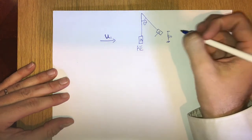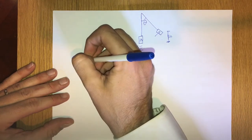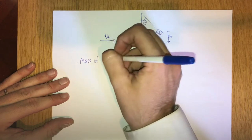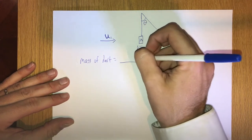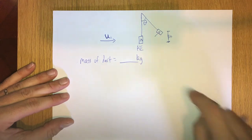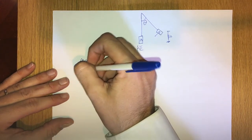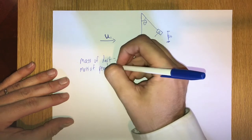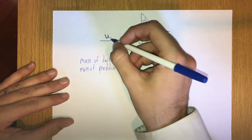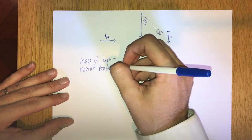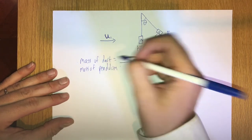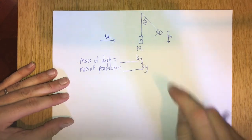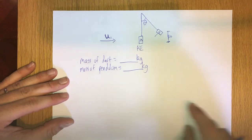One of the things we're going to need to know is the mass of the dart, which we'll measure in the lab in kilograms. We also want to know the mass of the pendulum. Because we're using momentum conservation, and momentum is the product of mass and velocity, both the mass of the dart and the mass of the pendulum will be known. Take a look on the chalkboards on lab day for those values.